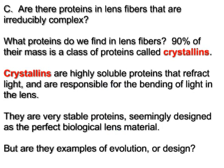90% of their mass is a class of proteins called crystallins. Crystallins are highly soluble proteins that refract light and are responsible for the bending of light in the lens. They are very stable proteins, seemingly designed as the perfect biological lens material.